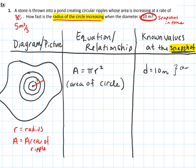I want to be clear that this is a changing diameter and changing radius. But at that snapshot in time, when the diameter is 10 meters, we write diameter equals 10 meters — but this is not a constant. At that same snapshot, the radius would be 5 meters. We are also told that the area is increasing at a rate of 5 meters squared per second.